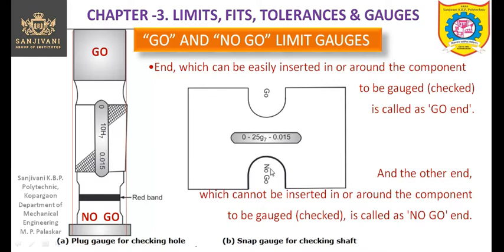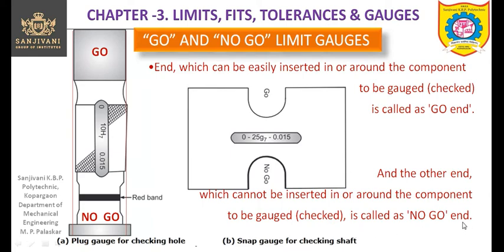The shaft can be inserted in the go end. We can also try to insert the shaft in the no-go end, but if the shaft is of correct size it cannot go in the no-go end — it can only enter the go end. The end which can be easily inserted in or around the component to be gauged or checked is called the go end.